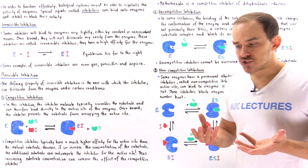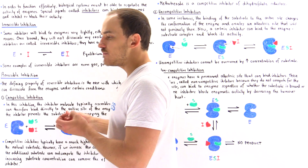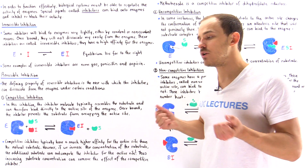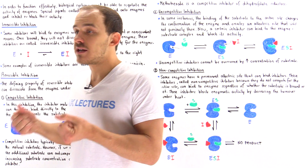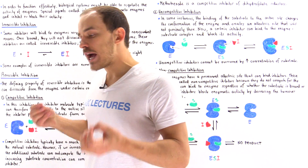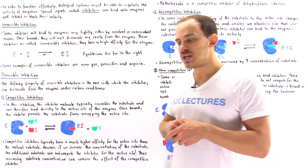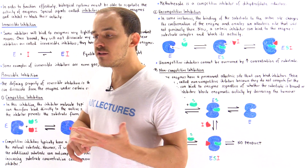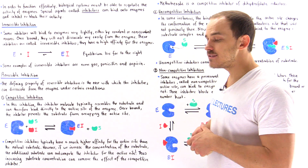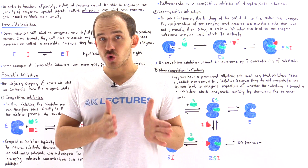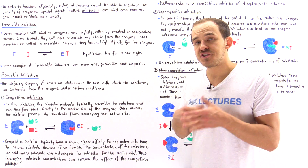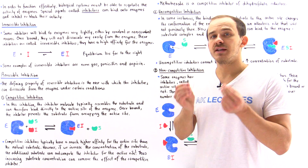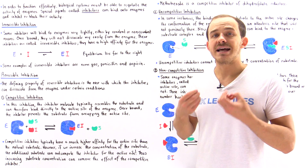We don't always want to produce some given product at a high rate. Sometimes we want to basically stop the production of a product because we have too much of that product inside our cell or inside the environment. So for biological systems such as our cells to actually function effectively and efficiently, they have to have a way of controlling and regulating the activity and functionality of enzymes. One way we can control enzyme activity is by using special molecules, and in some cases ions, to inhibit the activity of these enzymes — these are known as enzymatic inhibitors.